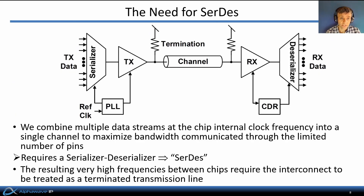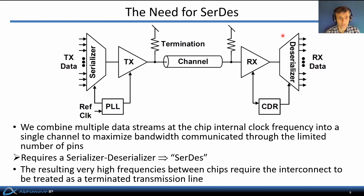To maximize the aggregate IO bandwidth given a limited number of connections between chips, we take multiple data streams operating at the chip's internal clock frequencies — for example, around a gigahertz — and combine them into a single data stream at a much higher rate, up to 200 or more gigabits per second. This requires a serializer at the transmitter and a deserializer at the receiver, called collectively SerDes for short.